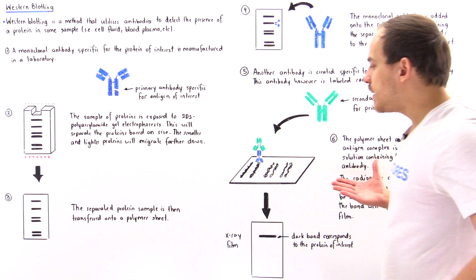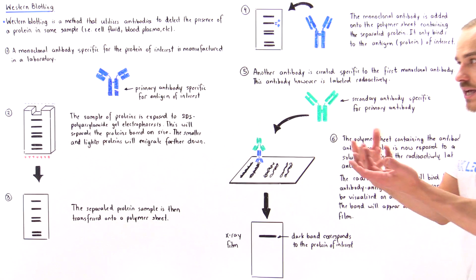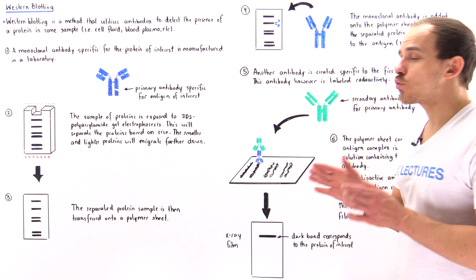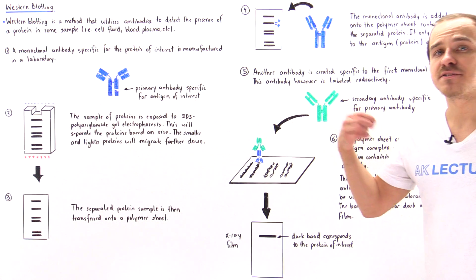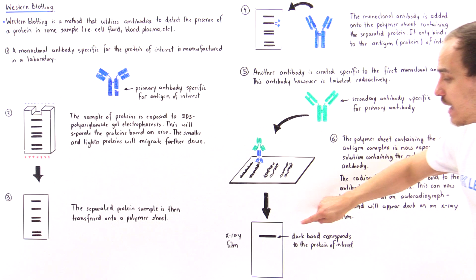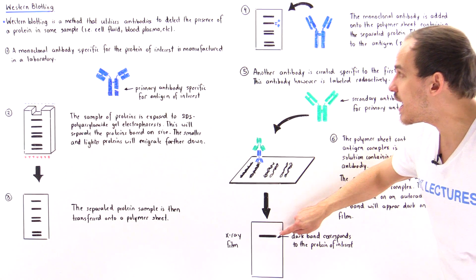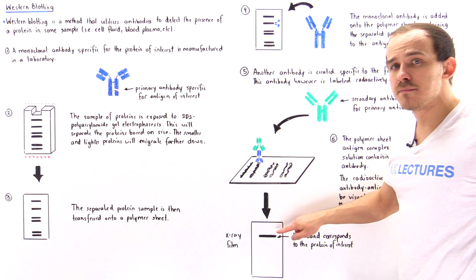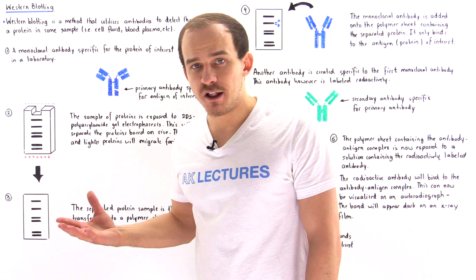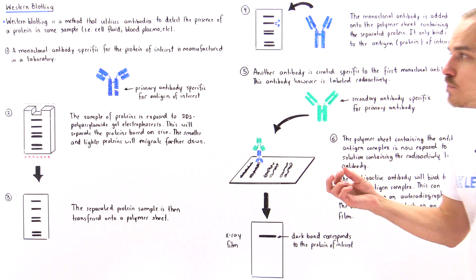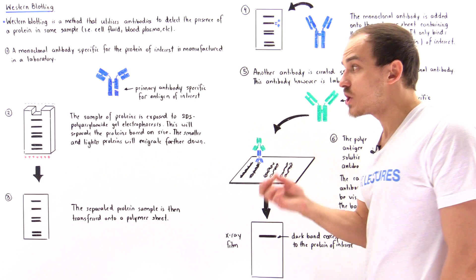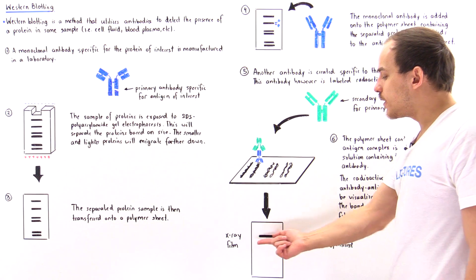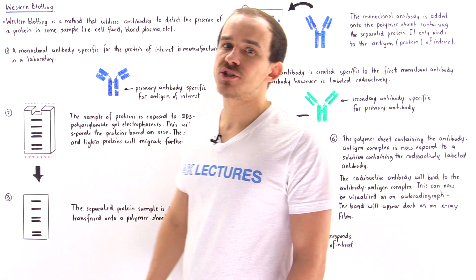In the final step, we take an x-ray film and expose it to x-rays. This allows us to visualize exactly where the radioactively labeled secondary antibody has bound. Because it is bound only to the protein on the second band, only that band will appear dark on the x-ray film. This allows us to precisely pinpoint where that protein is, and we can then isolate it from that specific location.